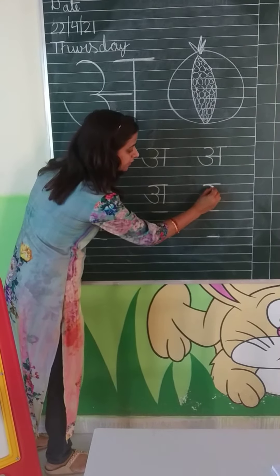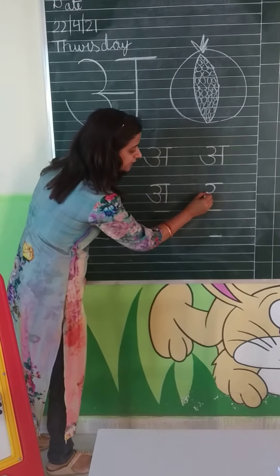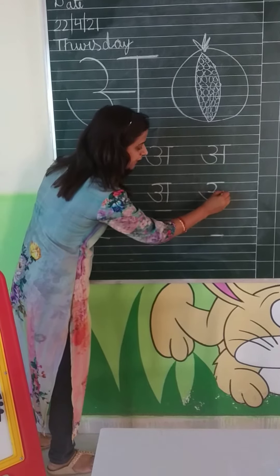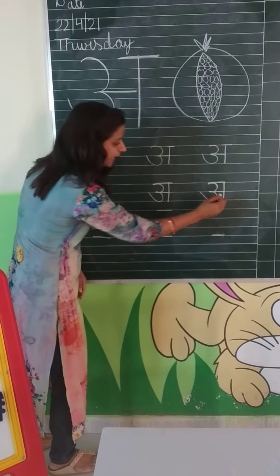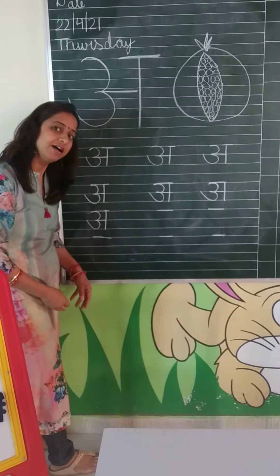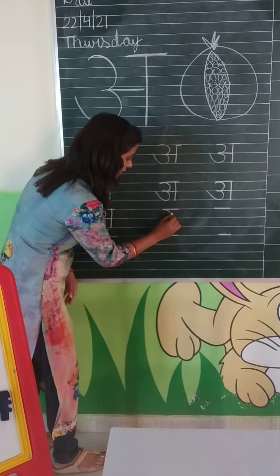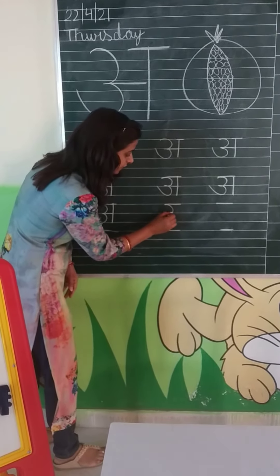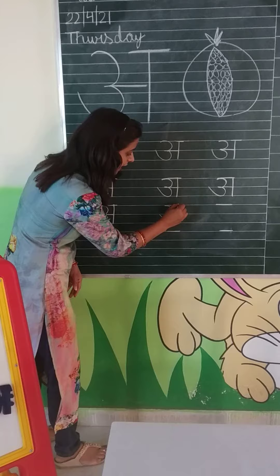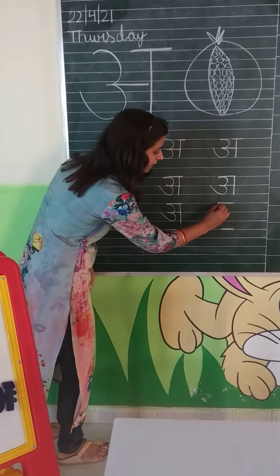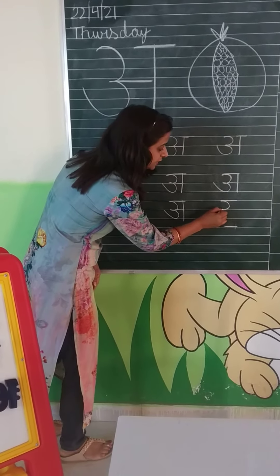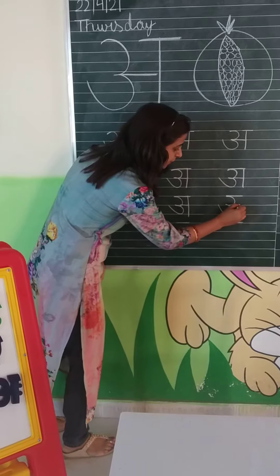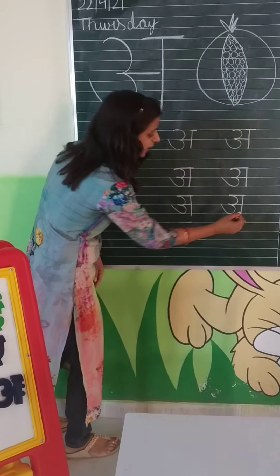Up. First curve, second curve, sleeping line, standing line. Up. First curve, second curve, sleeping line, standing line. First curve, second curve, sleeping line, standing line.